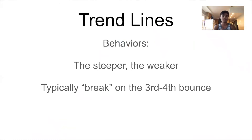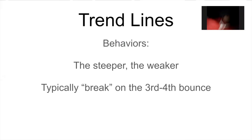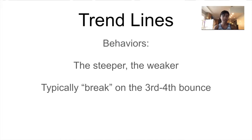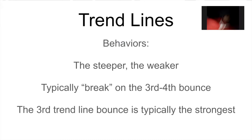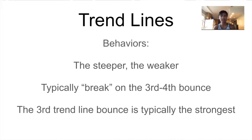If you see a steep trend line and price is heading towards it, you can make a trade waiting for the break and waiting for the retest. Or if you see less of a steep angle and you see a third bounce about to happen, chances are it's going to bounce instead of breaking. The third trend line bounce is typically the strongest — so if you see a trend line that's not very steep and a third bounce is about to happen, you can enter a buy or a sell, knowing the third bounce is the strongest and the angle means it's likely to hold up.